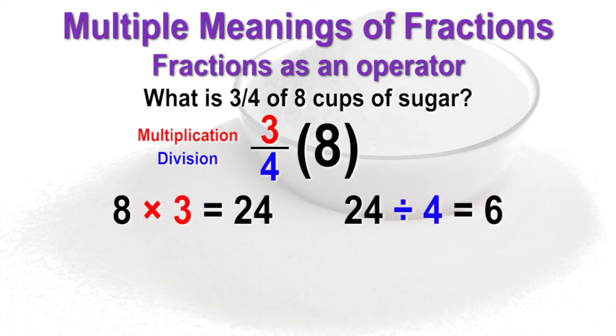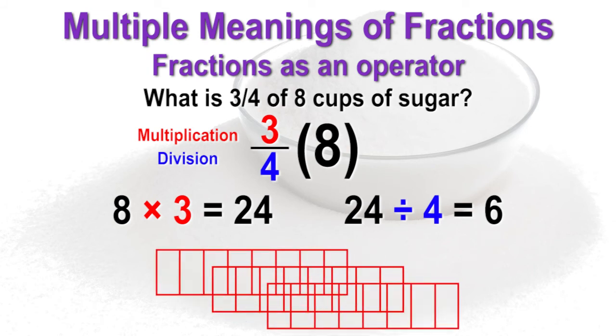Students could also multiply the numerator first, then divide by the denominator. Start by drawing the eight units or eight cups, then multiply by three to get twenty-four.